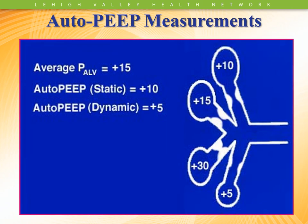When you look at auto-PEEP measurements, which are the classic way of determining how much air trapping is going on, the problem is that in order to do it correctly and get a correct picture of how severe the air trapping is, you have to hold these maneuvers for long periods of time. Because you have different alveoli — this one's really plugged up with an auto-PEEP of almost 30, while this one is only partially blocked with an auto-PEEP of 5. To get a real idea of the total auto-PEEP, you need to hold exhalation long enough, almost up to 10 seconds, which can cause a plethora of problems. Sometimes auto-PEEP measurements do not really totally reflect the true severity of auto-PEEP at that point.